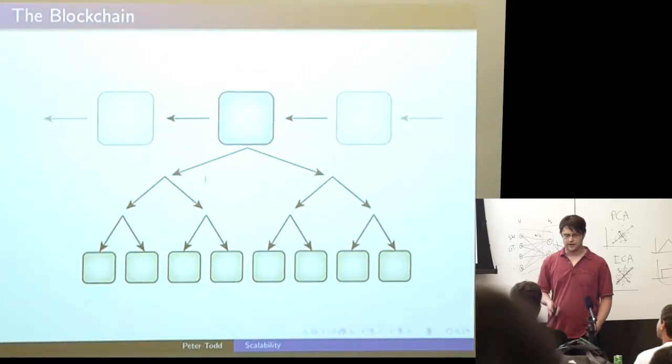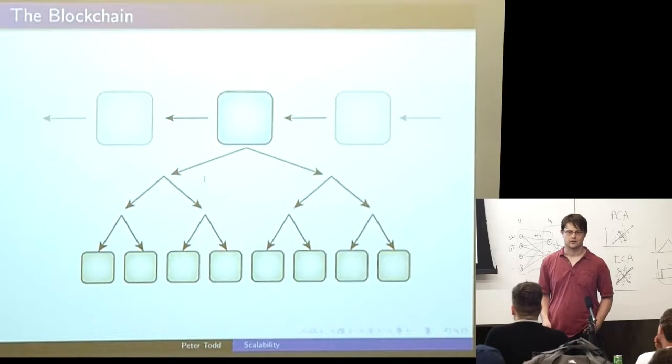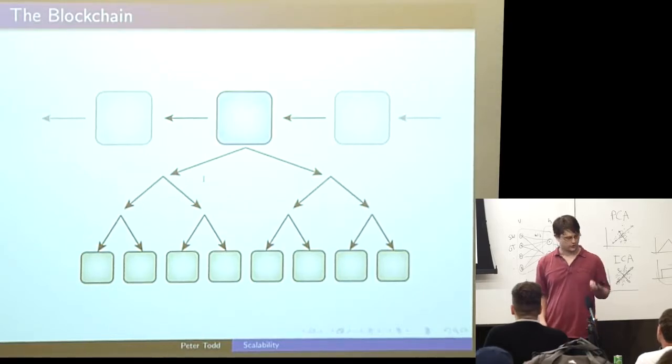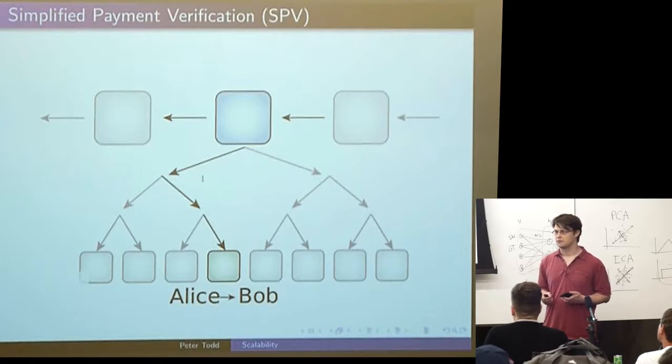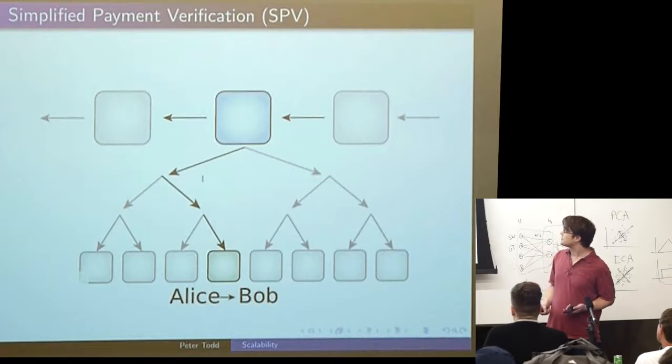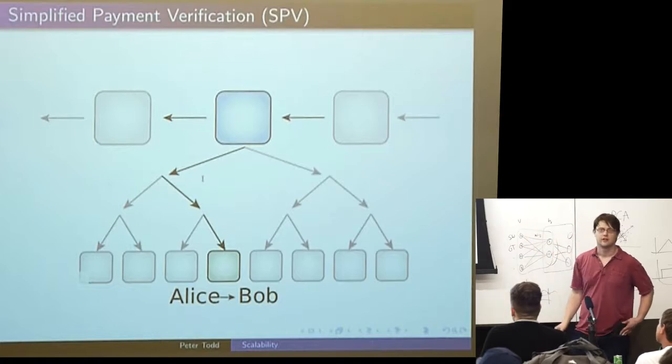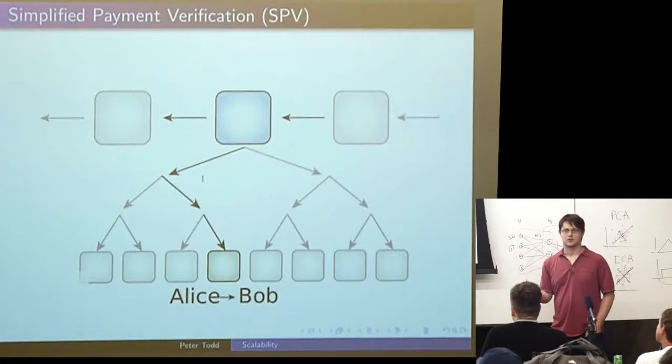And the beauty of it is for your average client, like my wonderful little Android phone here, when I want to go make a transaction and Alice is sending Bob money, Bob's phone has an ability to determine, well, is the transaction in the blockchain? And this is very easy. You just go follow up this tree. Standard computer science, trees have log n, log 2n scaling, and everything's all nice and happy.